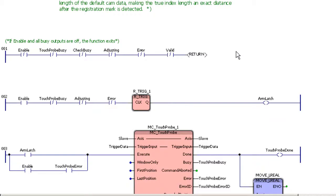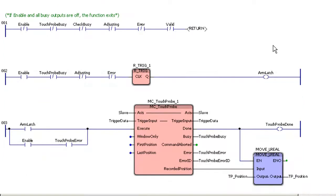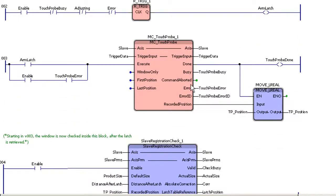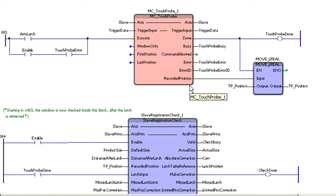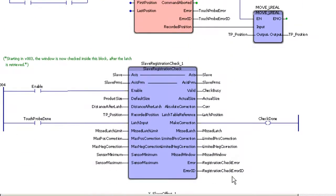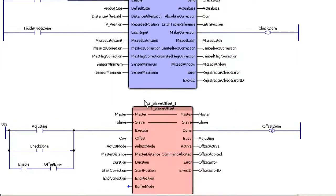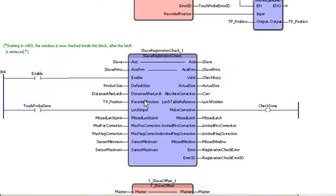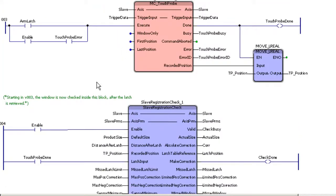Let's take a look at this block inside the cam toolbox. Normally these functions are buttoned up and locked — you can't view them. For the purposes of this webinar, I've unlocked these so you can see what's inside. Inside our cam slave feed to length, we have a simple touch probe that we arm. When we get a signal, it goes into the slave registration check block, validates it, then goes to a slave offset. When the slave offset is done, it goes back up and rearms the latch.